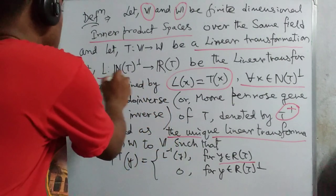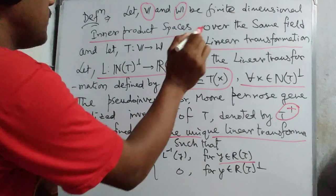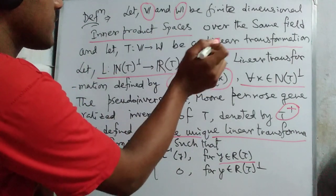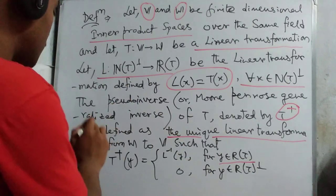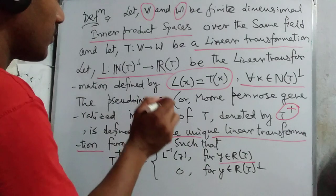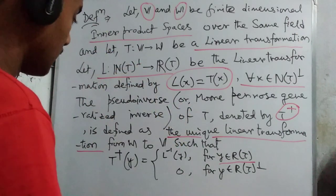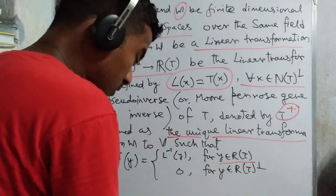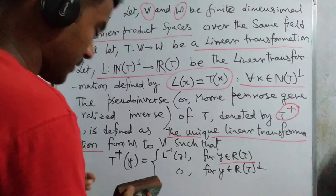To clarify: L is the restriction L: NT⊥ → RT with L(x) = T(x) for all x in NT⊥. We then define T†(y) = L⁻¹(y) for y belonging to RT.